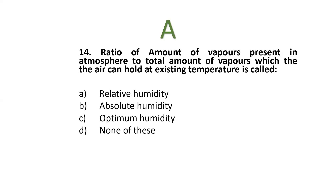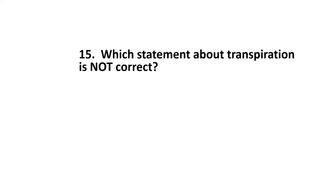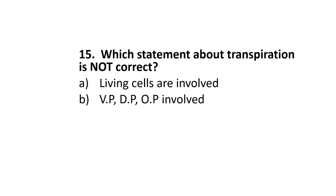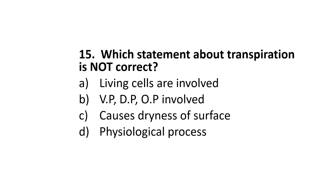Next: which statement about transpiration is not correct — living cells are involved; vapor pressure, diffusion pressure and osmotic potential are involved; it causes dryness of the surface; or it is a physiological process? The correct option is C: causes dryness of the surface.